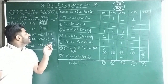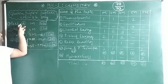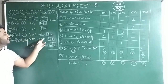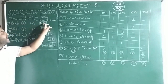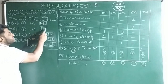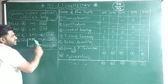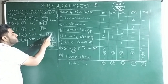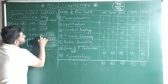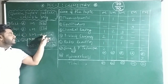The question paper contains four parts: Part A (1 mark), Part B (2 marks), Part C (3 marks), and Part D (5 marks). In Part A, there are 15 questions and you have to answer only 10. In Part B, there are 10 questions and you answer only 5. In Part C, there are 10 questions and you answer only 5. Remember, all three-mark questions are from inorganic chemistry only.